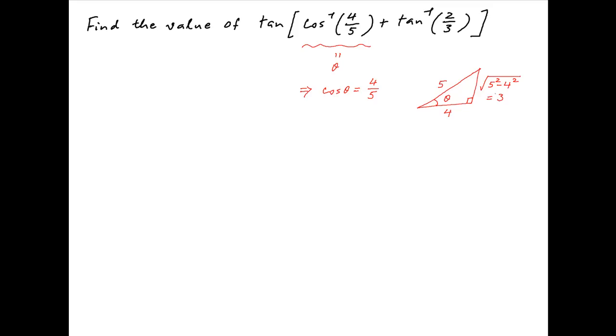Using Pythagoras theorem, the perpendicular is equal to square root of 5 square minus 4 square which is equal to 3. Therefore tan theta is equal to the perpendicular divided by the base which is equal to 3 upon 4. Therefore theta is equal to tan inverse 3 upon 4.